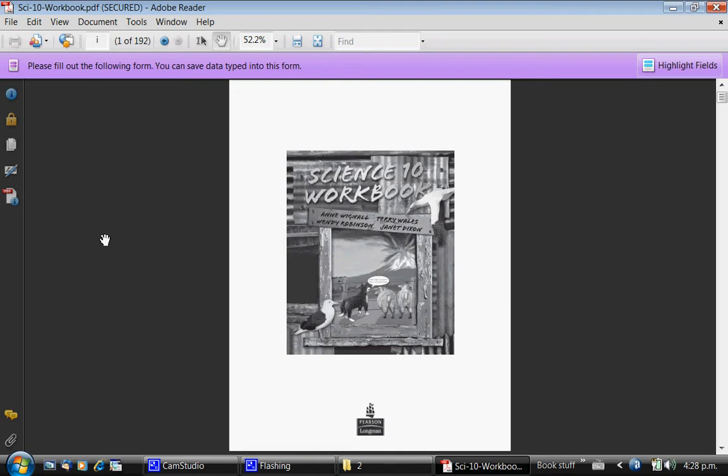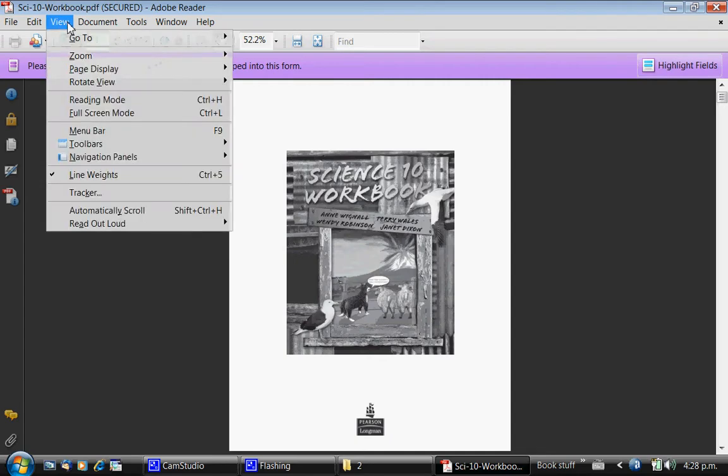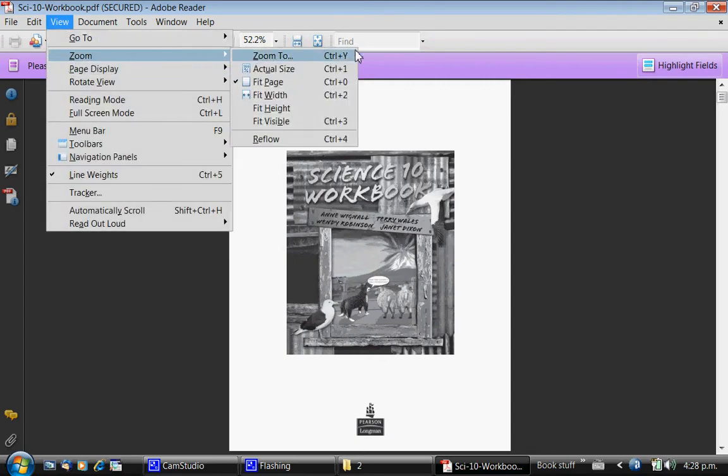Firstly, I'd like to show you some of the quick keys that you may not be familiar with. If we go to View and Zoom, you can see that using Ctrl-1, Ctrl-0, Ctrl-2 and Ctrl-3, we can quickly go to various useful settings.